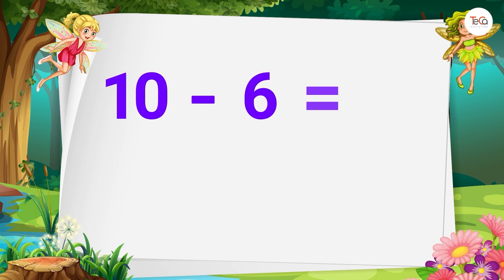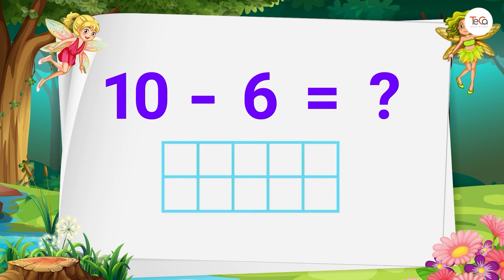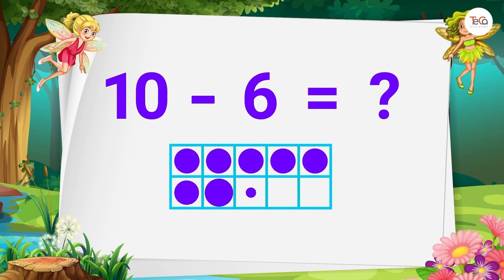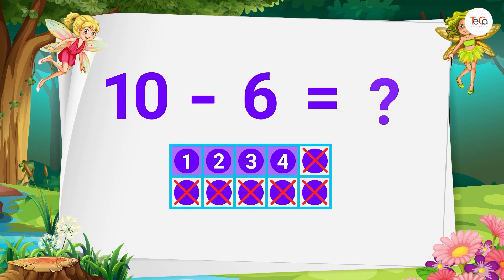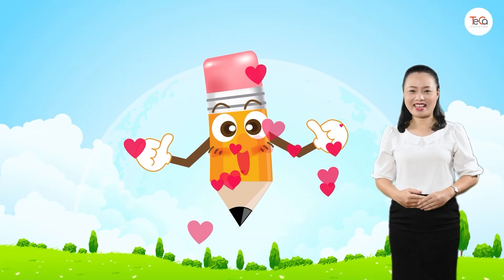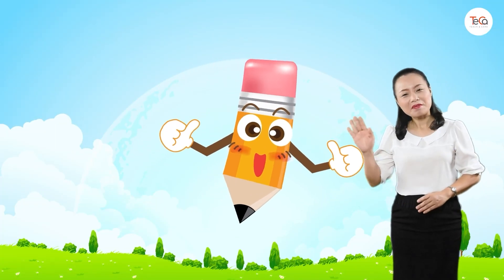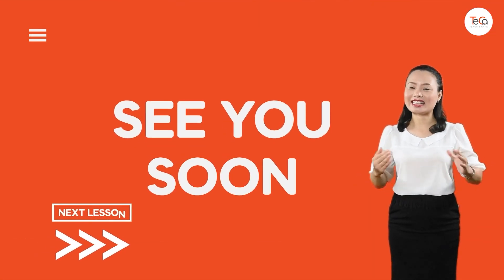Now, the last one. 10 minus 6 equals... Draw 10 dots, then cross out 6 dots. We have 4 dots left. So 10 minus 6 equals 4. Great! You've finished. Bye for now and see you soon in the next lesson.